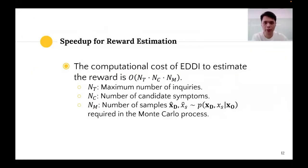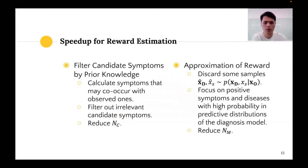The computational cost of ADI to estimate the reward is cubic. Because the total number of candidate symptoms N_C can account for thousands of symptoms, it would be too expensive to support an online service. Hence, we designed two speedup techniques for BESOLDA. First, we calculate symptoms that may co-occur with observed ones by prior knowledge, then filter out irrelevant candidate symptoms during reward estimation to reduce N_C. Second, in the Monte Carlo sampling process, we discard some samples and do not estimate their reward, focusing only on positive samples of X_S and samples of X_D with high probability in predictive distributions.